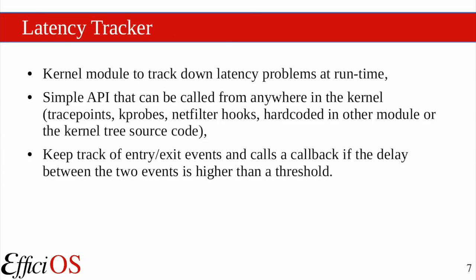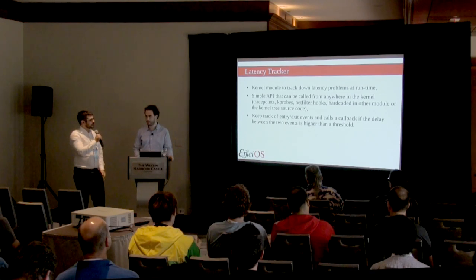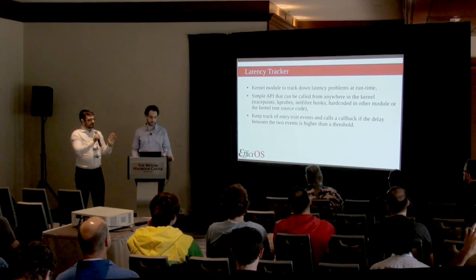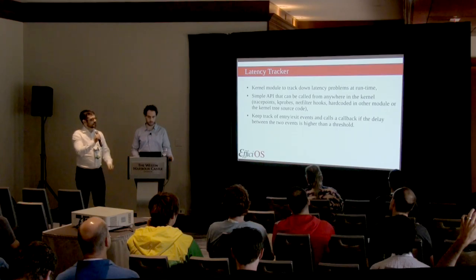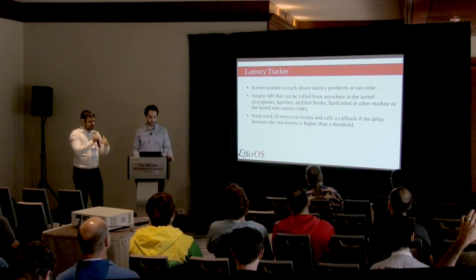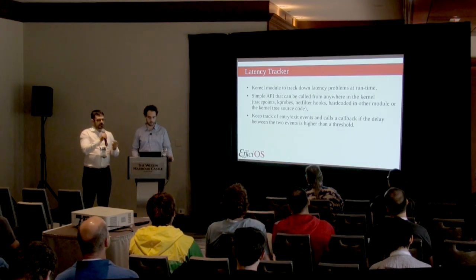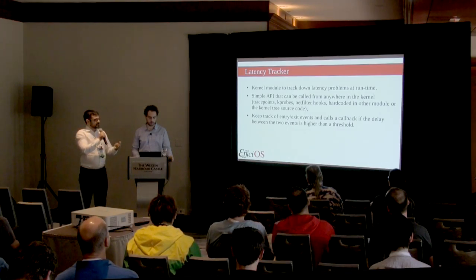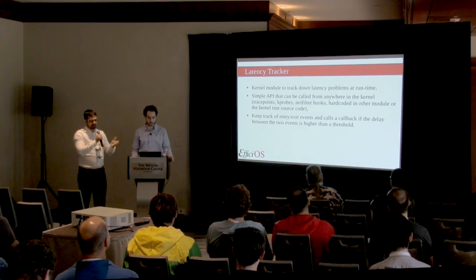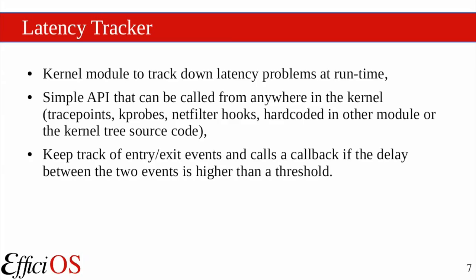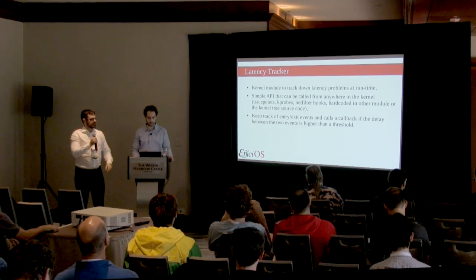The latency tracker is a fairly recent project — it started about two years ago and is still in alpha phase. It's a standalone set of kernel modules, so please provide feedback on it. It's a kernel module that tracks down latency problems at runtime. It provides a simple API that can be called from wherever in the kernel. It can work on trace points, kprobes, netfilter hooks, or hard-coded calls. It keeps track of entry and exit events, and calls a callback whenever a user-specified threshold has been reached or exceeded.